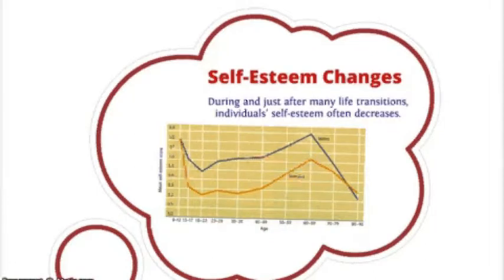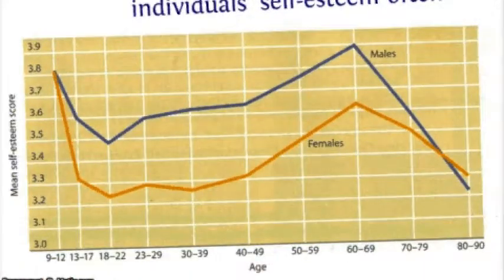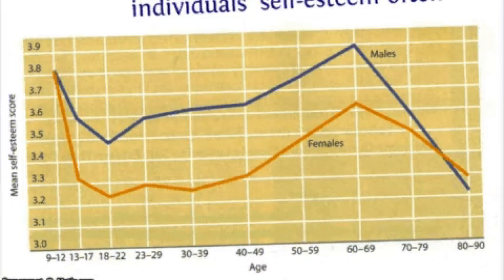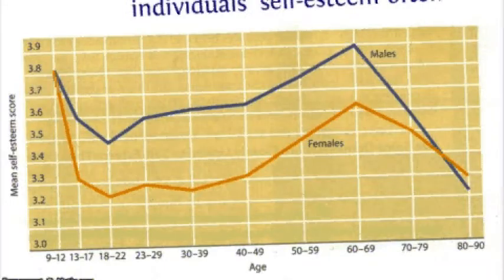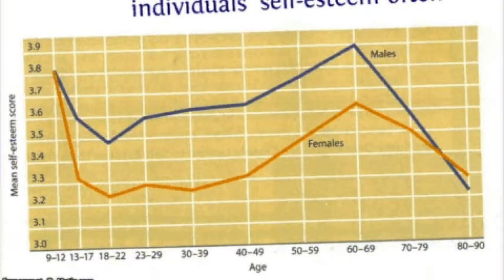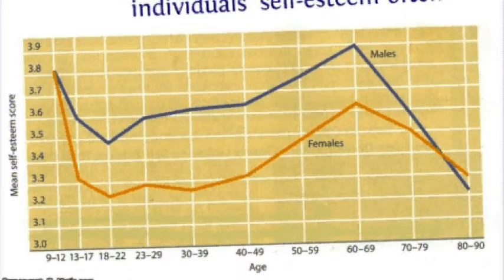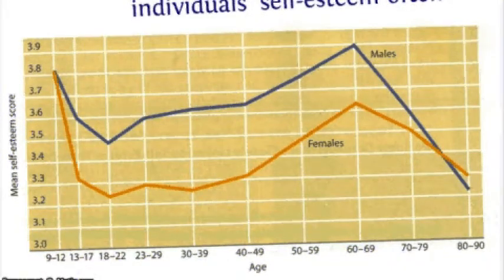Self-esteem changes. During and just after many life transitions, individual self-esteem often decreases. This decrease in self-esteem may occur during the transition from middle or junior high school to high school, and from high school to college. One cross-sectional study assessed the self-esteem of a very large, diverse sample of individuals from 9 to 90 years of age. These individuals were asked to respond to the item, 'I have high self-esteem,' on a 5-point scale where 5 stood for strongly agree and 1 stood for strongly disagree. Based on the chart, self-esteem decreased in adolescence, increased in the 20s, leveled off in the 30s, rose in the 40s through the mid-60s, and then dropped in the 70s and 80s. At most ages, males reported higher self-esteem than females.